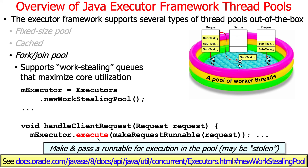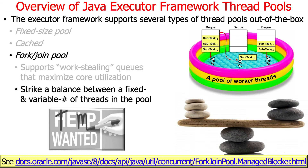The fork-join model is very powerful, striking a balance between fixed-size and variable-size thread pools. There are also ways to temporarily grow the pool size using something called a managed blocker. It's a very complex model to program, which is why it's fortunate that somebody else implemented it — we just use the mechanism. We'll talk more about fork-join pools in another context.